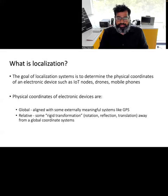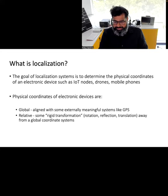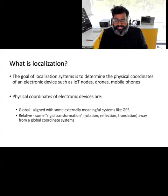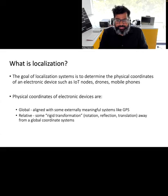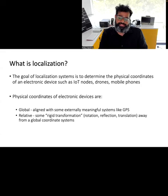What do we mean by localization within the context of this course? It means being able to figure out the physical coordinates of an electronic device such as an IoT device, drone, or mobile phone. These physical coordinates can be either globally aligned with systems such as GPS — giving latitude or longitude readings — or determined with respect to some other fixed reference, such as wireless devices in a lecture theater.